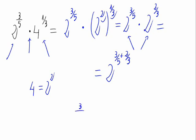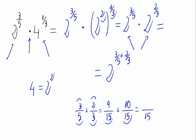3/5 plus 2/3. Lowest common multiple is 15. 15 divided by 5 is 3, so 3 times 3 is 9. 15 divided by 3 is 5, so 5 times 2 is 10. It would be 19/15.